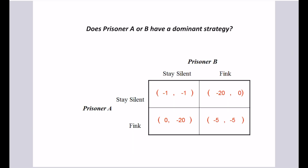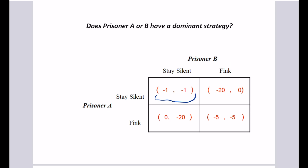To illustrate Nash equilibrium and dominant strategy, let's return to the prisoner's dilemma. We have prisoner A on the left and prisoner B. The decisions or choice set are: stay silent or fink, for each prisoner. The payoffs in each parenthetical statement show the row player — prisoner A's payoff first, and B's second. So negative 20 means 20 years in jail, zero means going free. If prisoner A stays silent and prisoner B finks, prisoner A gets 20 years and prisoner B goes free.